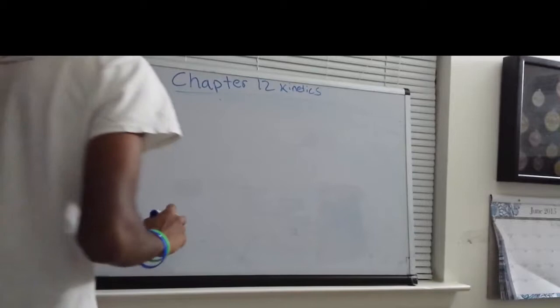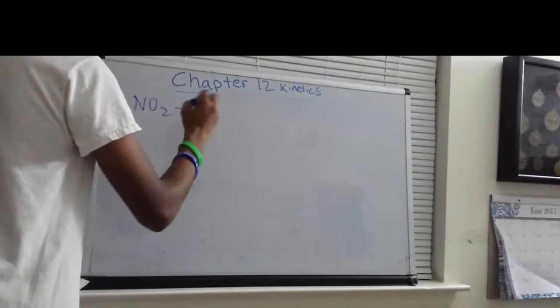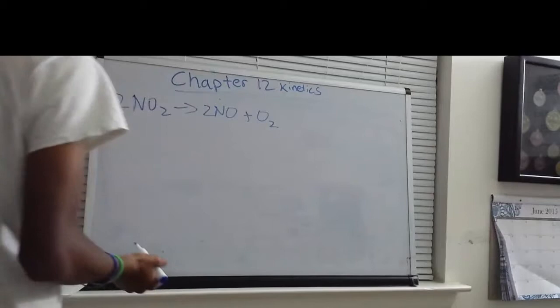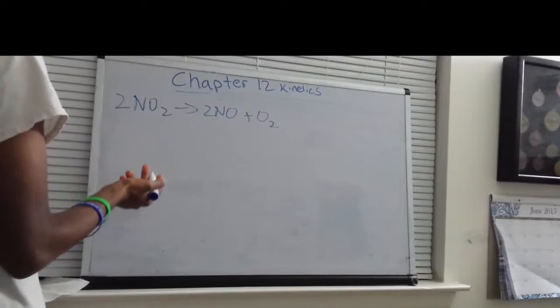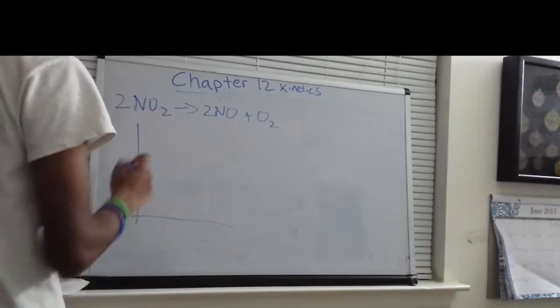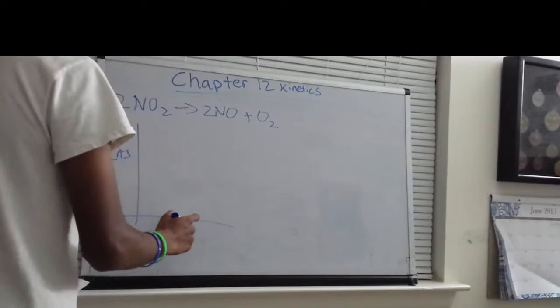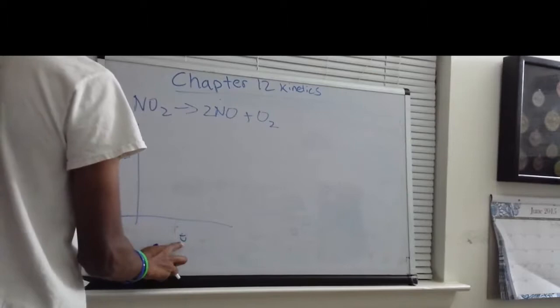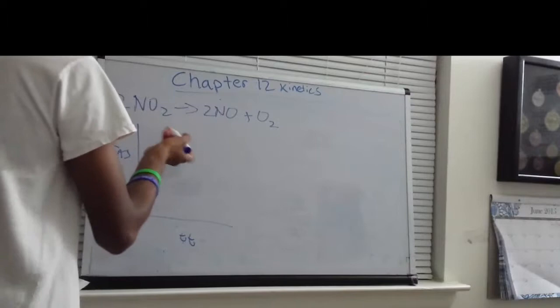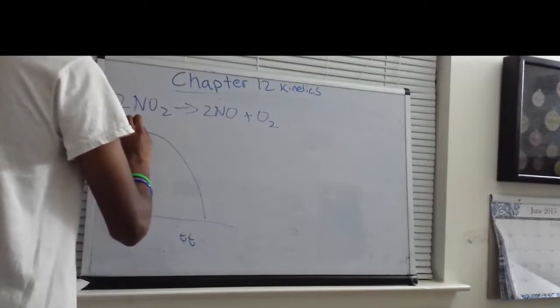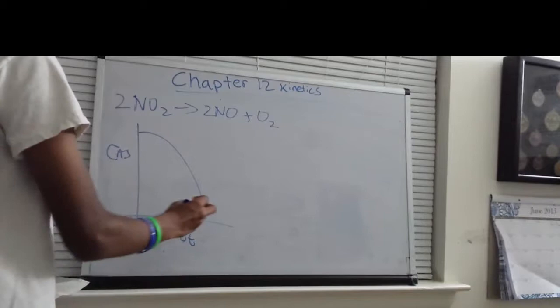Let's look at an example. Let's say we have two moles of NO₂ that decomposes into two moles of nitrogen monoxide plus one mole of O₂. To show the relationship between the reaction rates — the change in concentration over change in time — I'd draw a graph with the y-axis being the concentration of A and the x-axis being time. For NO₂, since it's a reactant, the concentration slowly decreases over time. And since we're only considering the forward reaction, all the reactant gets used up, so at some time T, its concentration will be zero.